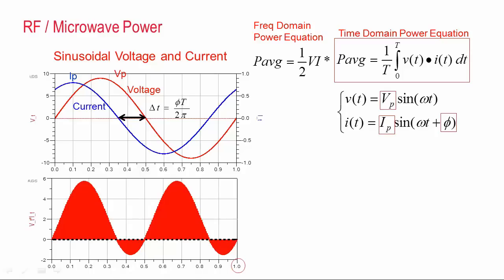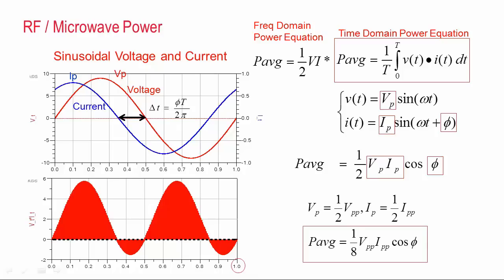Now for the waveforms described by these equations, the integral works out to be simply a multiplication of one half of the peak values times the cosine of the phase offset between the voltage and current. The peak values are, of course, half of the peak-to-peak values, so we can also express this equation in terms of peak-to-peak waveforms too, and knowing both expressions for power can be quite useful.